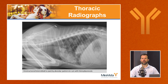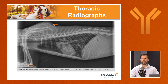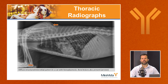Mixed lung patterns are common — for example, a diffuse interstitial pattern coalescing to alveolar disease in several areas. Histo can also imitate asthma, neoplasia, heartworm, or even bacterial pneumonias. Also notable: bone involvement can accompany pulmonary disease. In one cat, the scapulae, radius, and ulna were all affected — bone involvement being more common in cats than dogs.